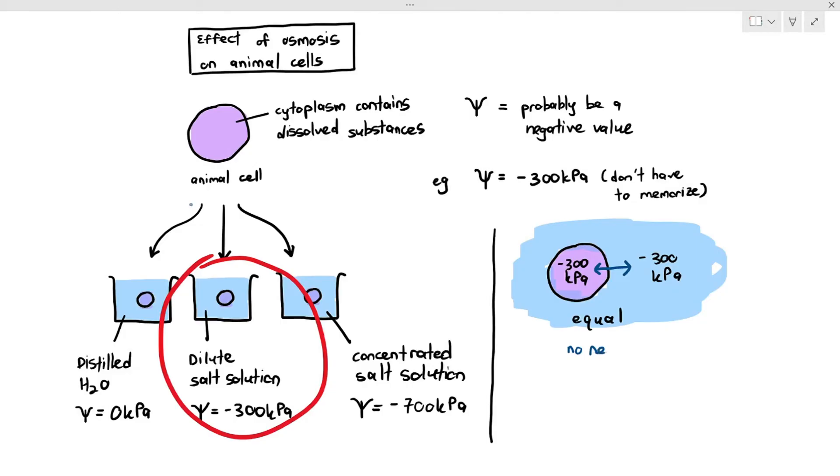Osmosis will not happen because there won't be a net movement of water either into the cell or out of the cell. It is very important to know that water is still moving in and out of the cell, but at an equal rate, which means the amount of water going into the cell and the amount of water going out of the cell is the same. Therefore, will the cell expand or shrink? It will neither shrink nor expand because there is no net change in the volume of the cytoplasm. So in this situation, it's very important to know that osmosis is no longer taking place.